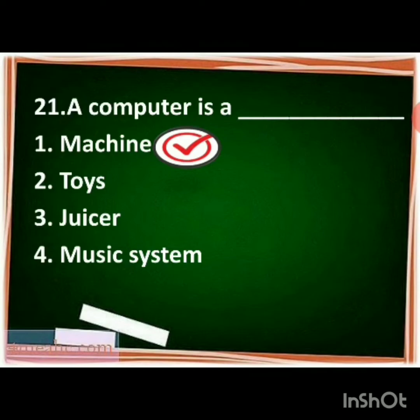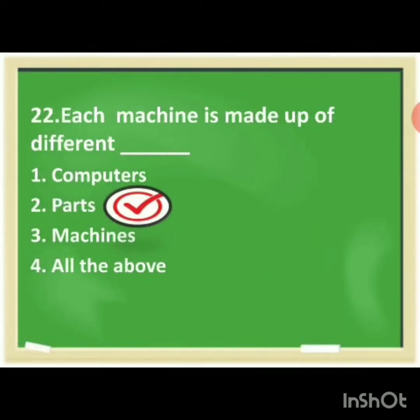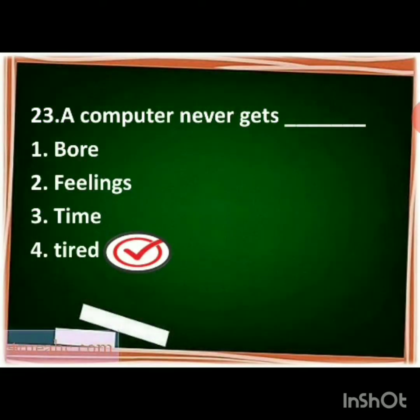Next: each machine is made up of different dash. The options are computers, parts, machines, all the above. The correct answer is parts. Each machine is made up of different parts. You have to make the tick mark for parts.